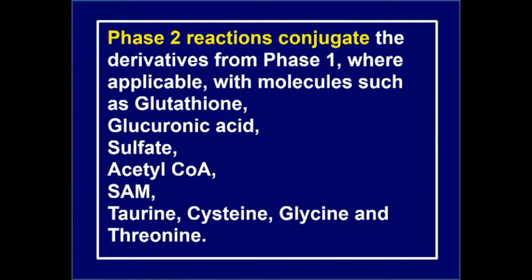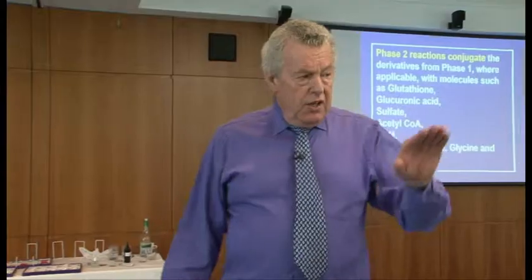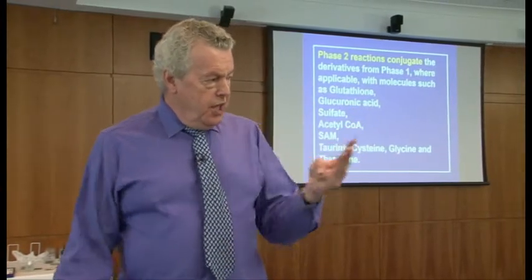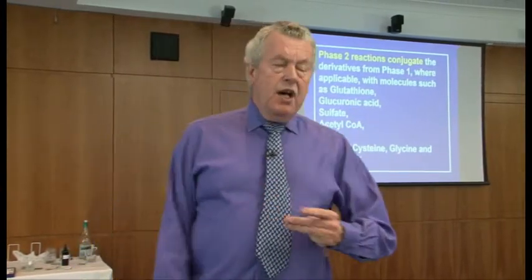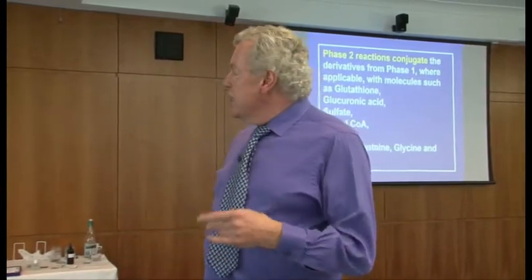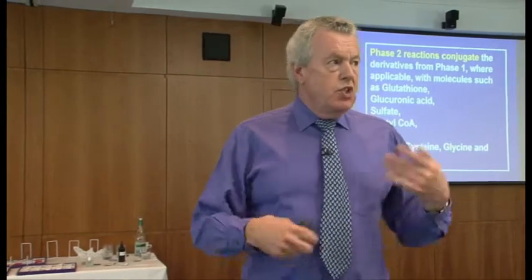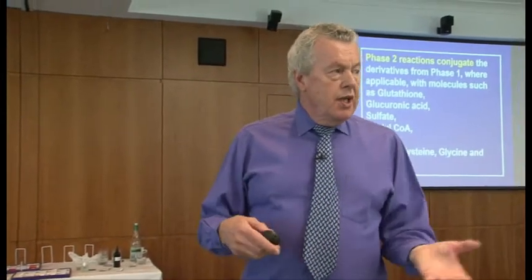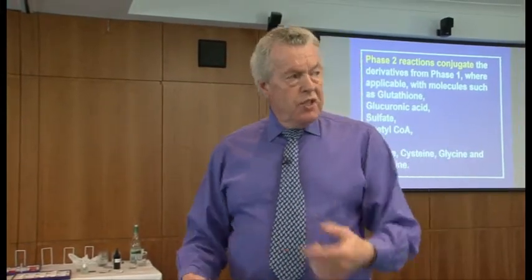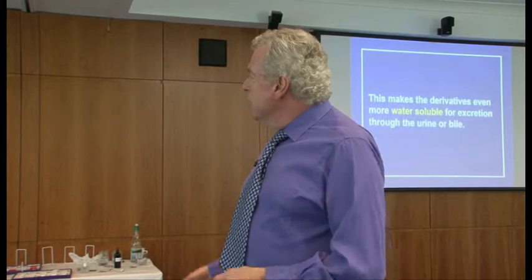The major detoxifiers of phase two are glutathione, glucuronic acid, sulfation, and acetylation — those are the four biggies. Usually the problems are in one of those. So knowing which foods can stimulate these and which nutrients can stimulate them gives you the answer to the phase two detoxification picture.